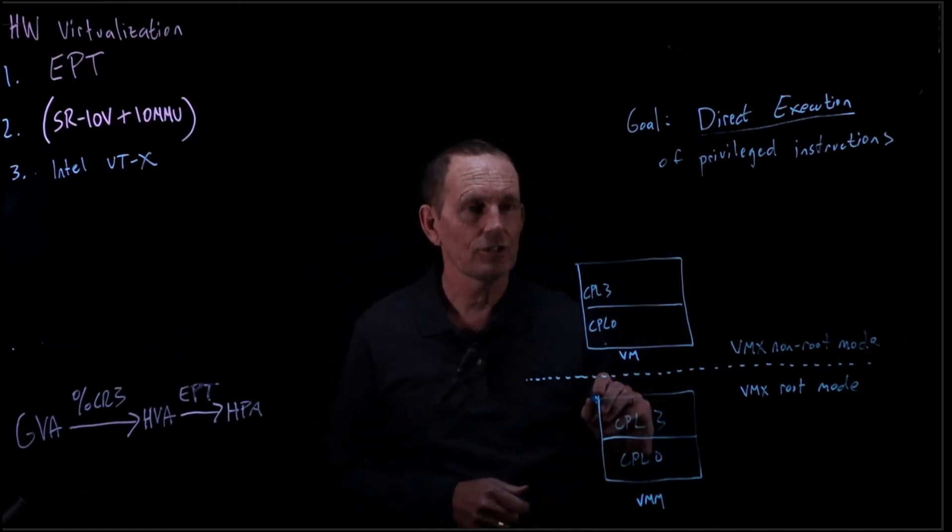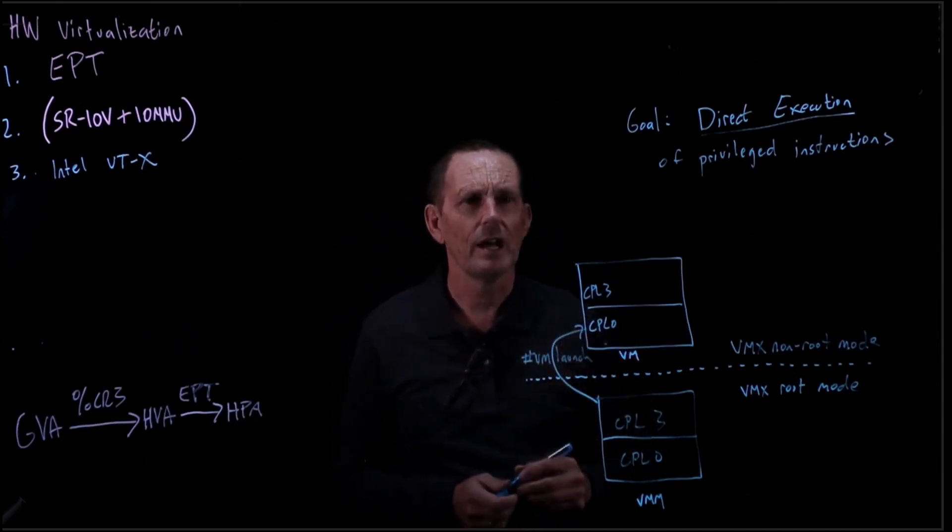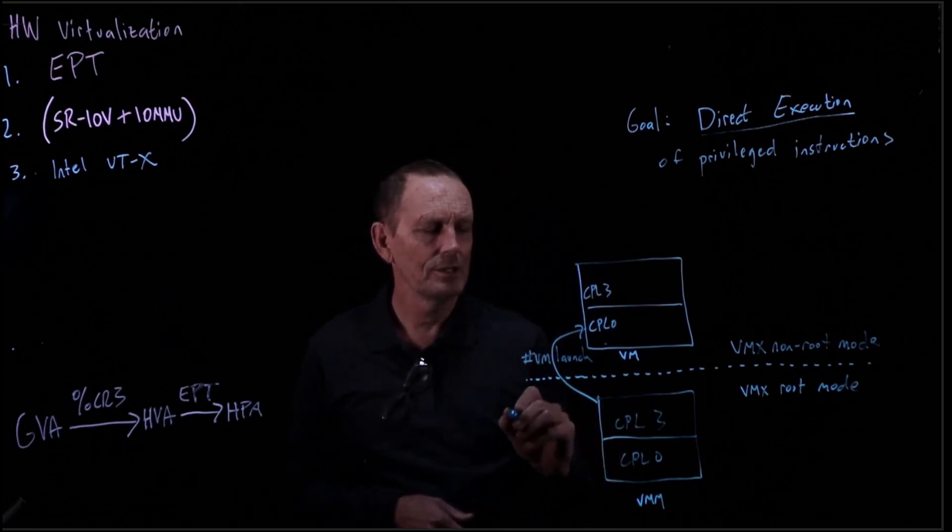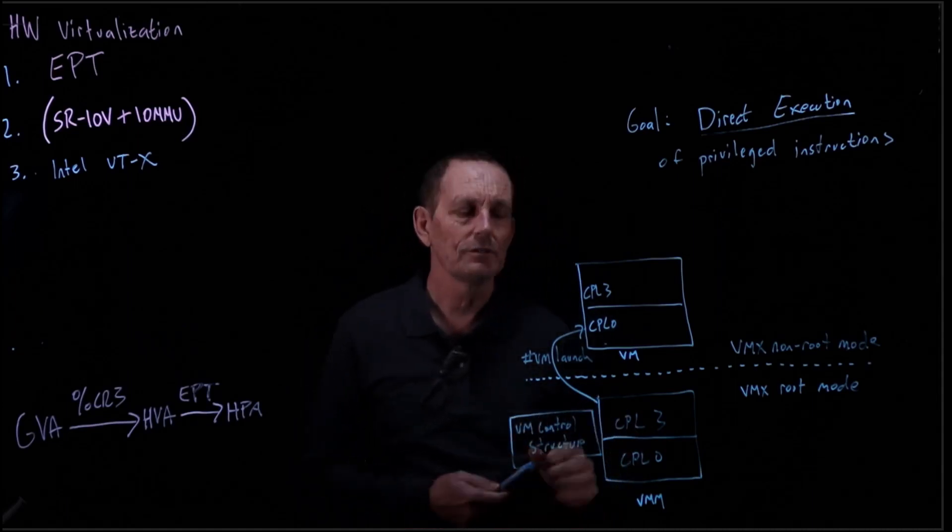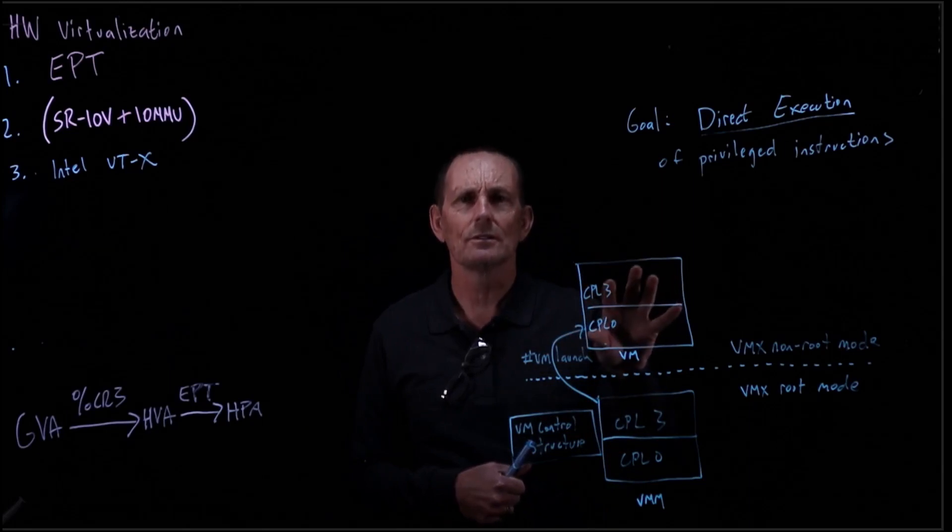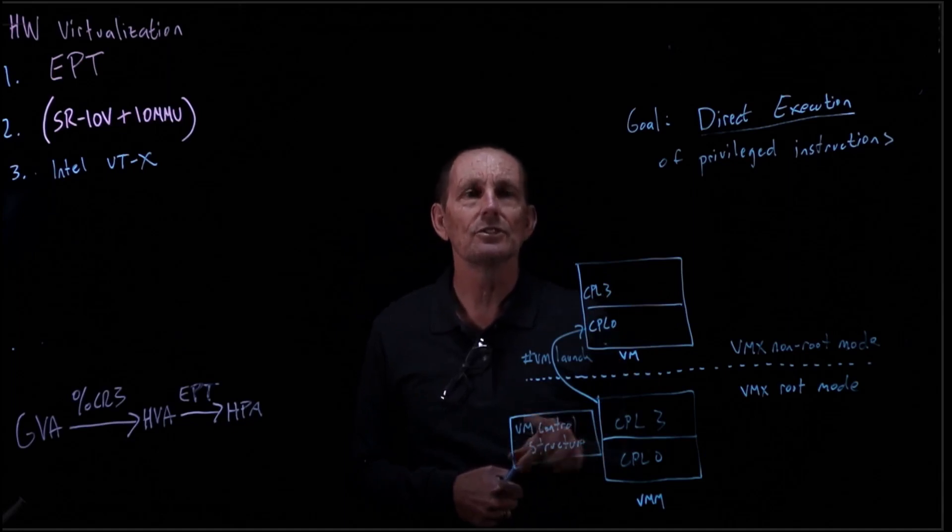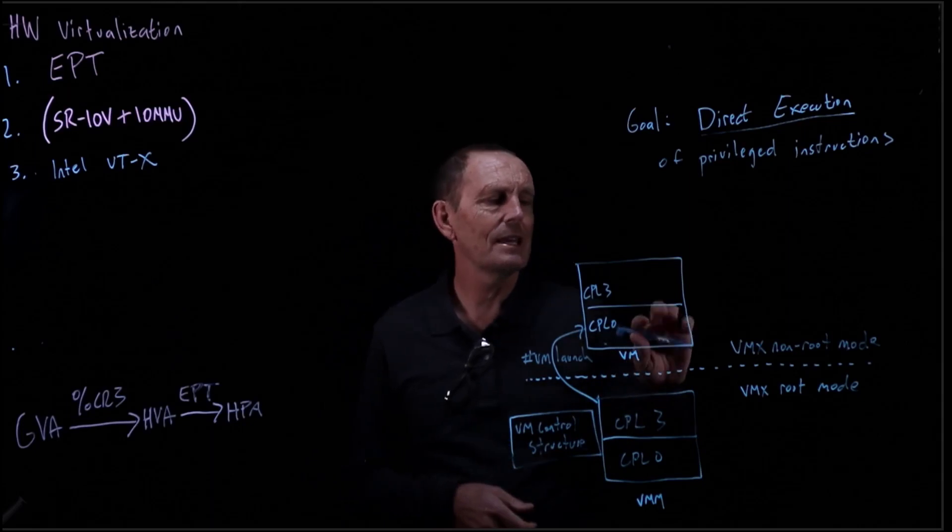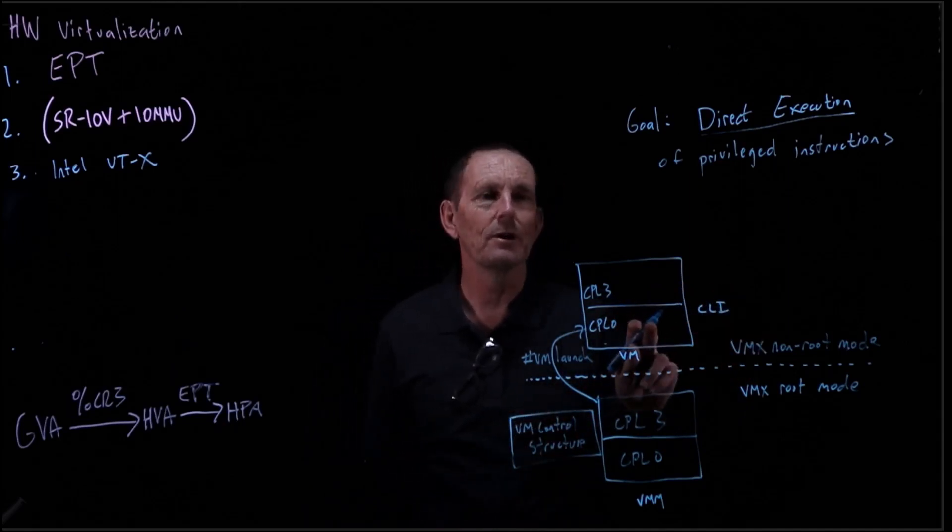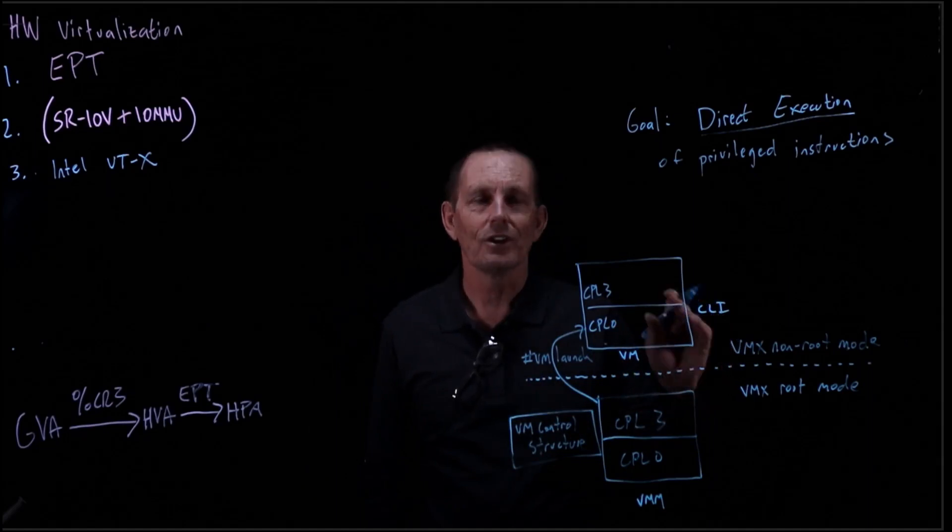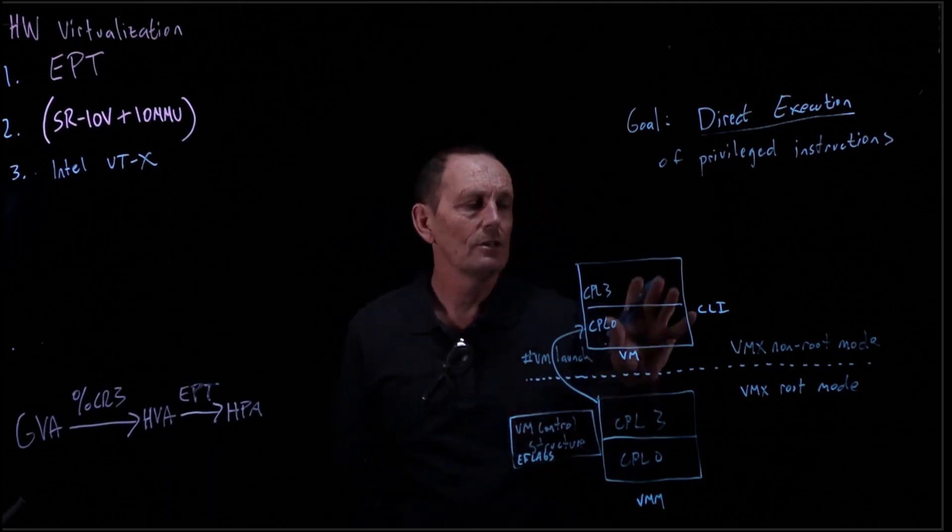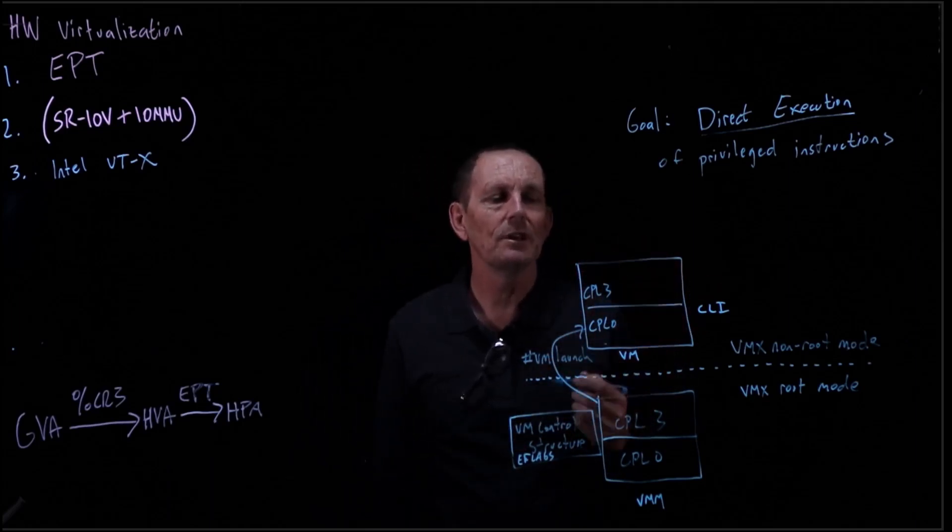One of them, for instance, is the instruction that launches a virtual machine, VM launch. It will start up a virtual machine and it uses a VM control structure. This VM control structure configures how this VM is going to be executing. We'll look at some of those options shortly. In addition, the VM control structure is used to save information. As an example, let's say this VM does a clear interrupt. That is not going to trap, assuming we're in CPL 0 mode of the VM. Instead, what it's going to do is turn off the bit in the e-flags that controls this. Well, those e-flags are part of this control structure.